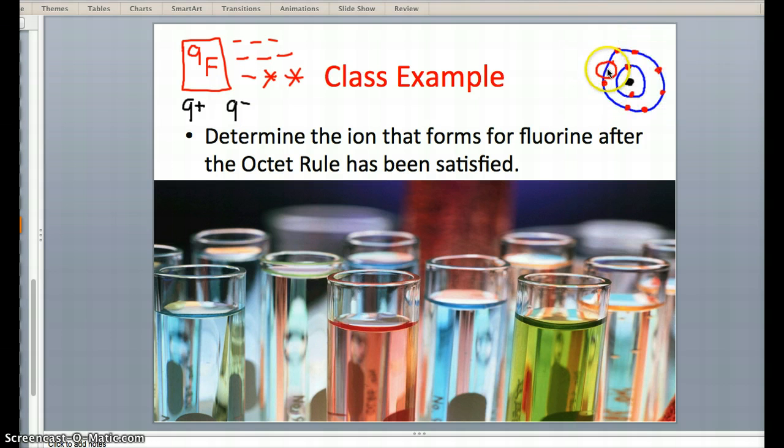So with the addition of 1 more electron, this is now 10 negatives. Which means that I have 9 positives, 10 negatives, giving me 1 extra minus. If I have 1 extra minus, fluorine is going to become an F 1 minus ion.